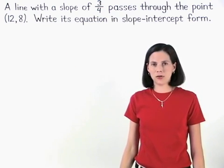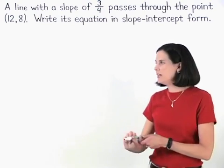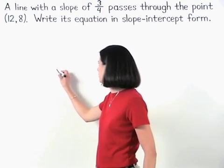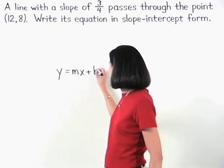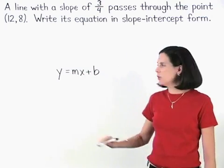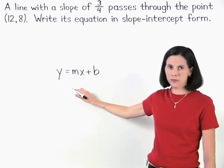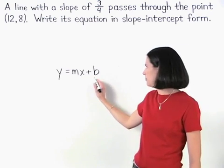Remember that slope-intercept form is the same thing as y equals mx plus b form. And to write the equation of a line in y equals mx plus b form, we need to know the values of m and b.